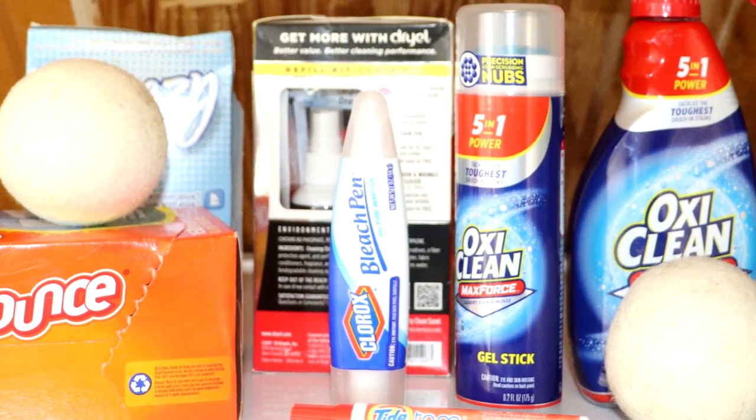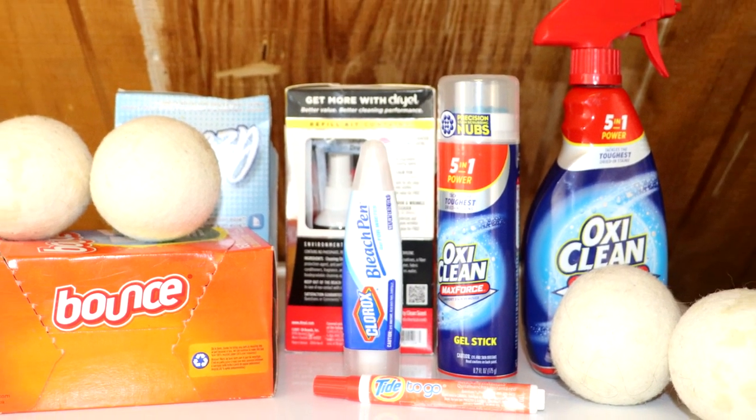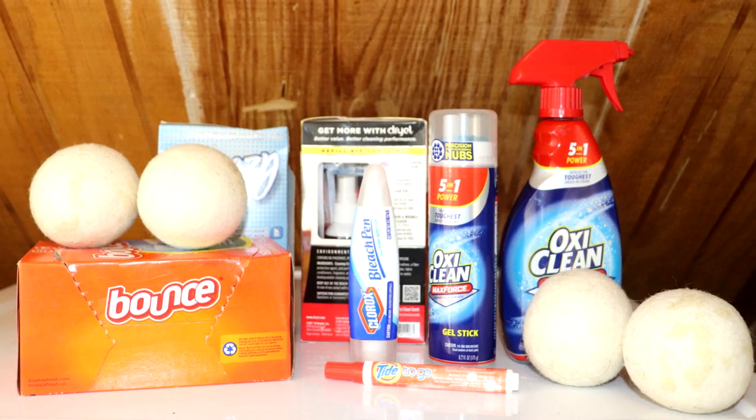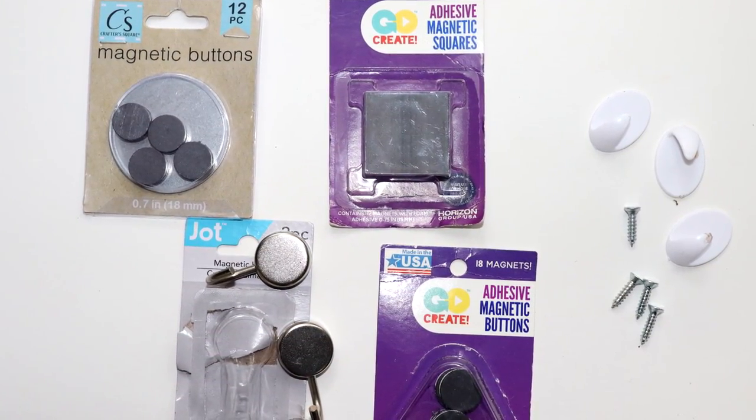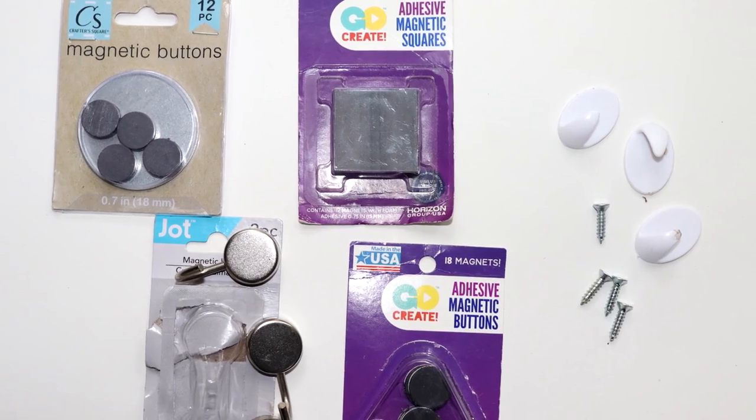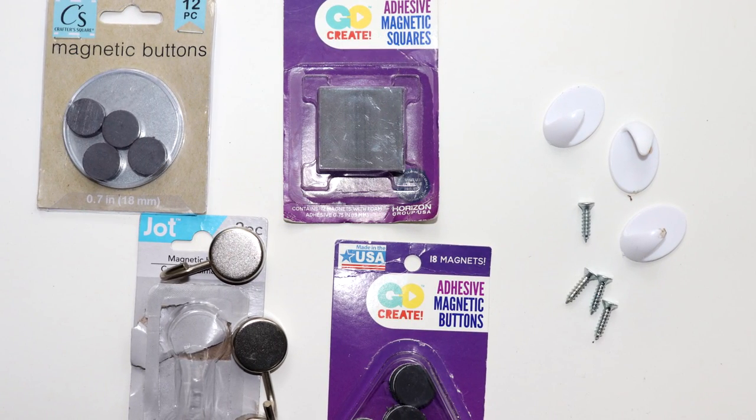As for items like stain remover sprays, gels, and pens, or items like dryer sheets and balls or other accessories, magnets, hooks, and screws can be used alone or with containers to keep these miscellaneous items right on the side of a washer or dryer or on nearby walls.